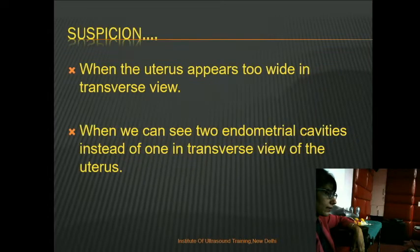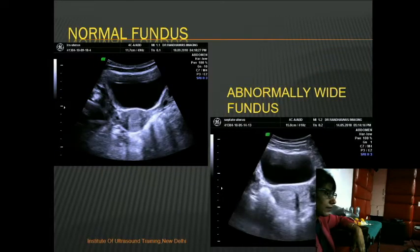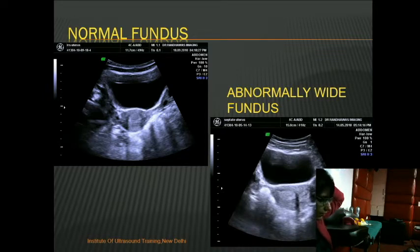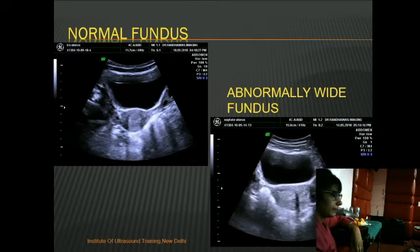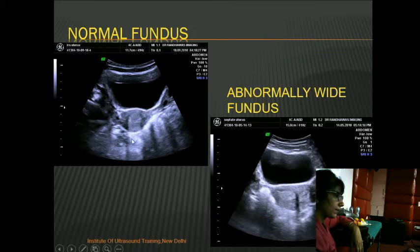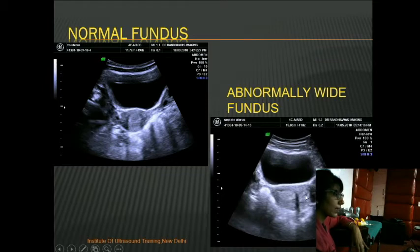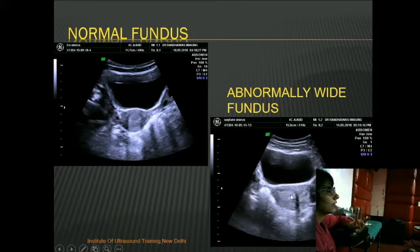Let us see — I have two pictures here, both are transverse views. Can you find any difference between them? This is a normal transverse view — the fundus has a normal contour, and this is the endometrium with through transmission. Now here, the fundus almost looks the same, but how many cavities? Two cavities. This transverse section looks too wide and I see two cavities, so your first doubt regarding a uterine anomaly arises when you see two endometrial cavities.